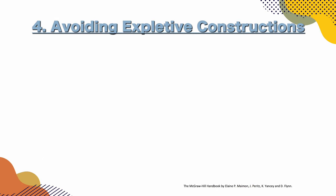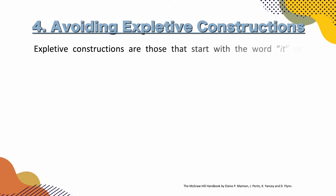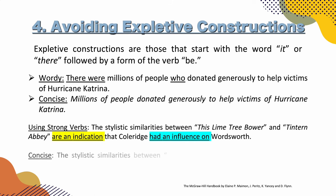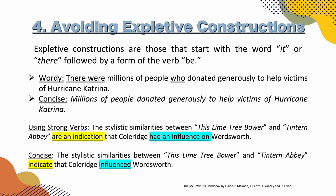Avoiding expletive constructions. Expletive constructions are those that start with the word 'it' or 'there,' followed by a form of the verb 'be.' For example, the wordy sentence: 'There were millions of people who donated generously to help victims of Hurricane Katrina.' The concise version: 'Millions of people donated generously to help victims of Hurricane Katrina.' Sounds much better.